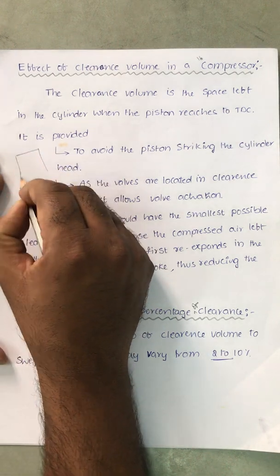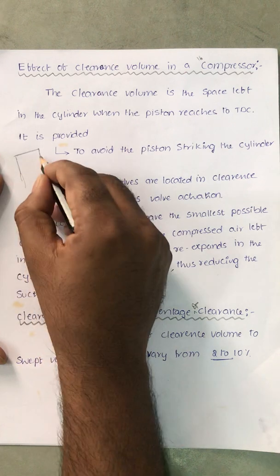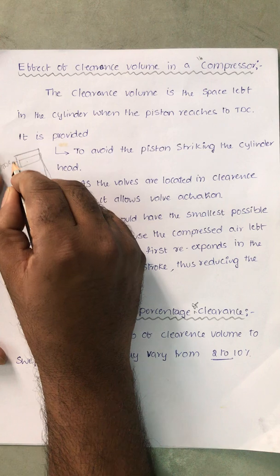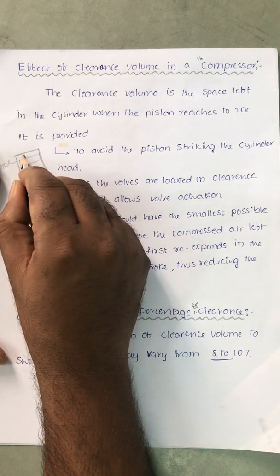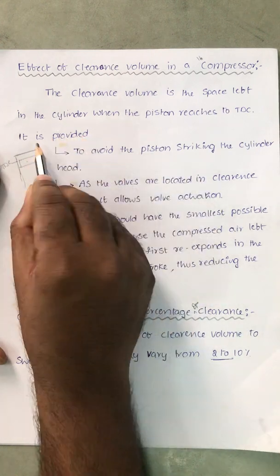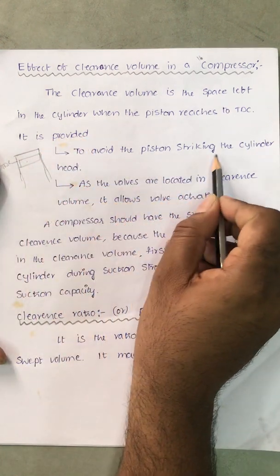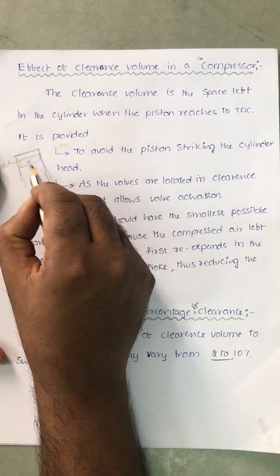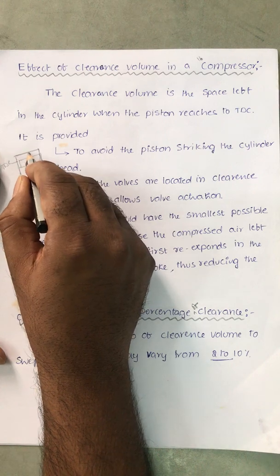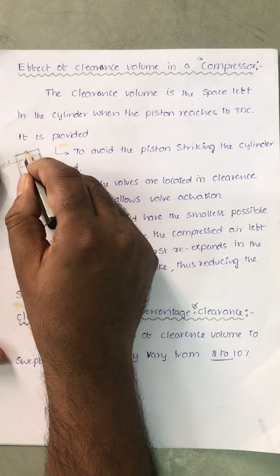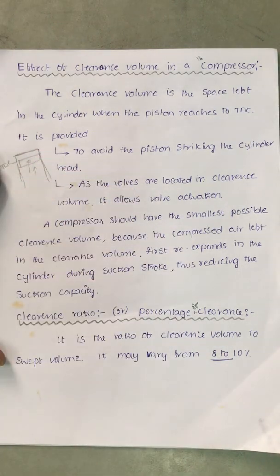This is the piston-cylinder arrangement. For example, this is the top dead center. When the piston reaches to top dead center there is some volume provided — that is called the clearance volume. It is provided to avoid the piston striking the cylinder head. If there is no clearance volume, the piston may go and touch the cylinder head, causing damage, making the engine more vibrant and more noisy.